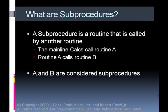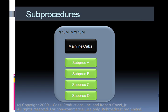So what are subprocedures? Subprocedures are a routine that's called by another routine, whether it's the mainline calcs or another subprocedure. If the mainline calcs call routine A and routine A calls routine B, then routines A and B are both considered subprocedures. In a normal program, the mainline calcs usually call into the subprocedures, but the subprocedures themselves can also call other subprocedures.